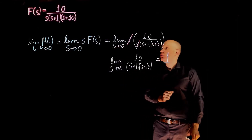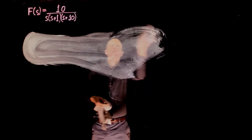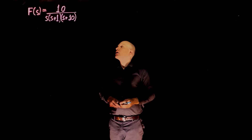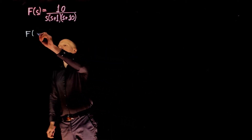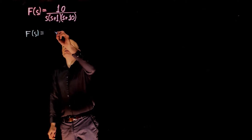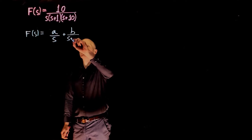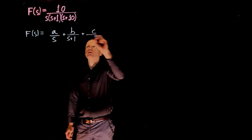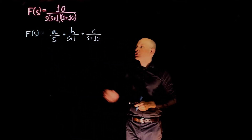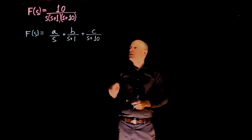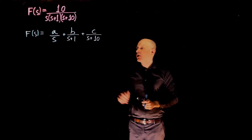We have two ways to perform the partial fraction decomposition. F(s) can be written in the form a/s plus b/(s+1) plus c/(s+10). Our job is to find a, b, and c — and each of these smaller fractions can be found in a table of Laplace transforms.